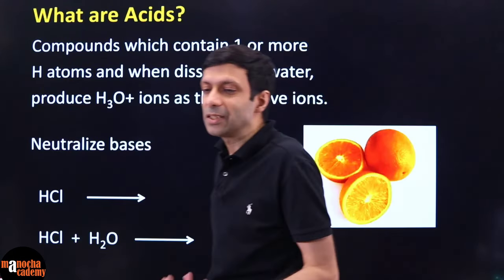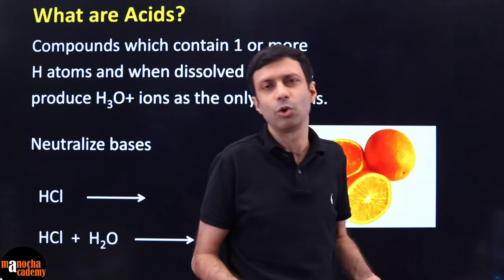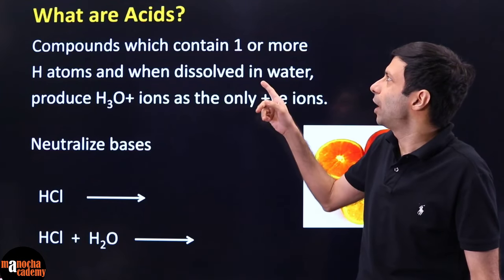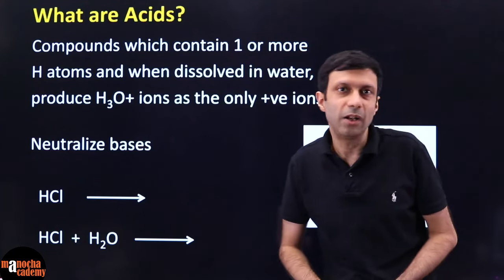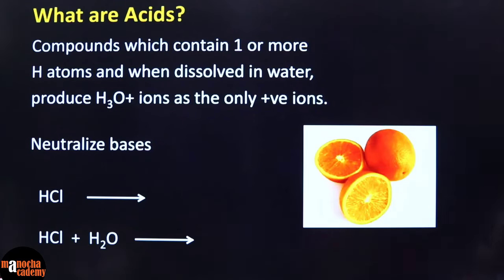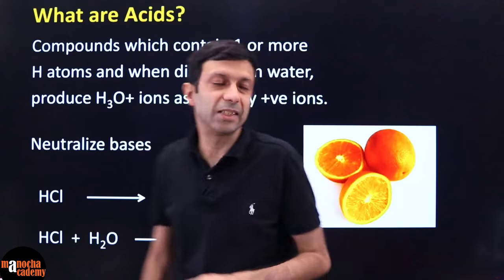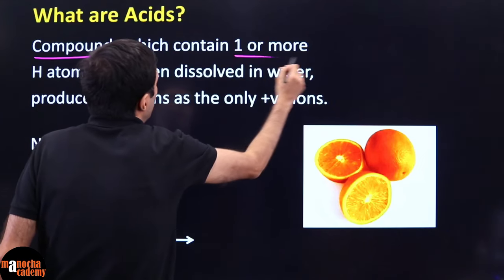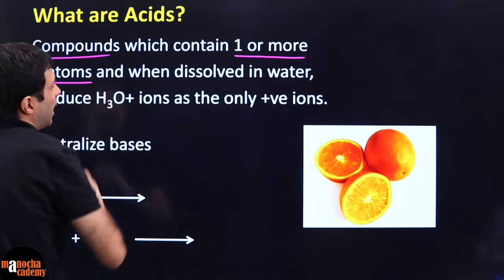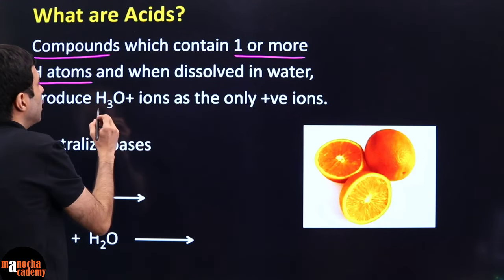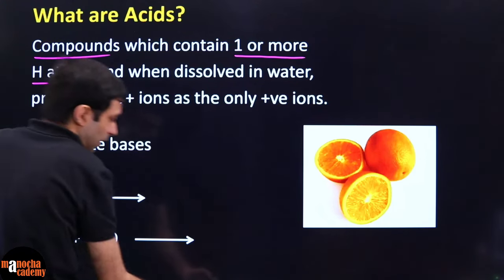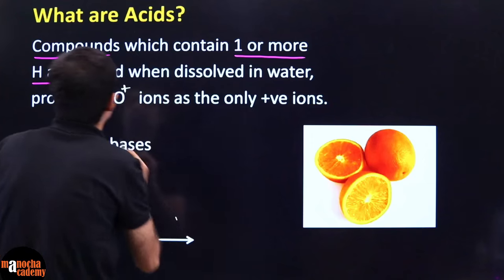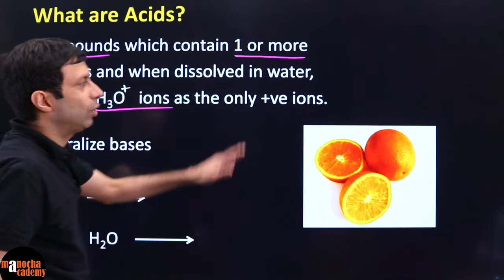What are acids? Acids are sour, corrosive, turn blue litmus to red, and so on. But basically, acids are compounds which contain one or more hydrogen atoms, and when dissolved in water they produce H3O⁺ ions — hydronium ions — as the only positive ions. For example, dissolving lemon juice in water produces H3O⁺ ions.